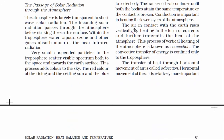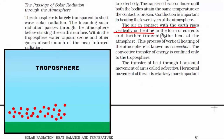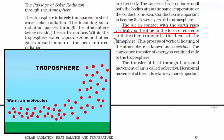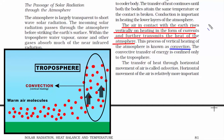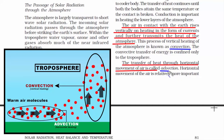The air in contact with the earth — the air around us — is warm, and warm air rises vertically, straight up. As it goes up, it comes in contact with the troposphere. This process of vertical heating of the atmosphere is known as convection. On the other hand, the transfer of heat through horizontal movement of air is called advection. You have to remember these two terms: advection and convection — one goes straight up and the other goes sideways.